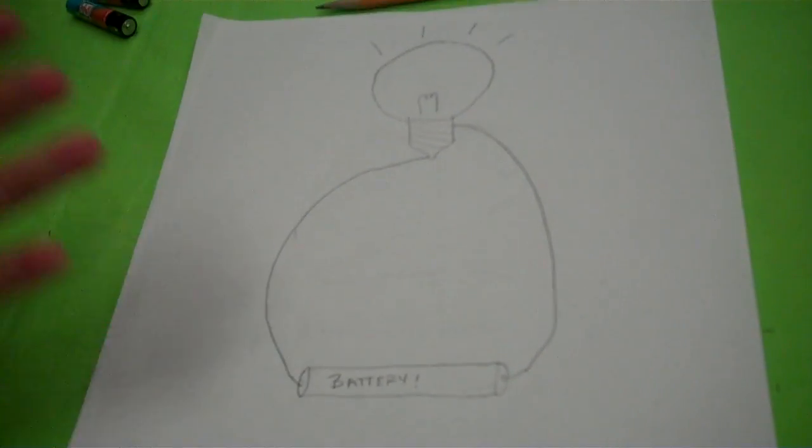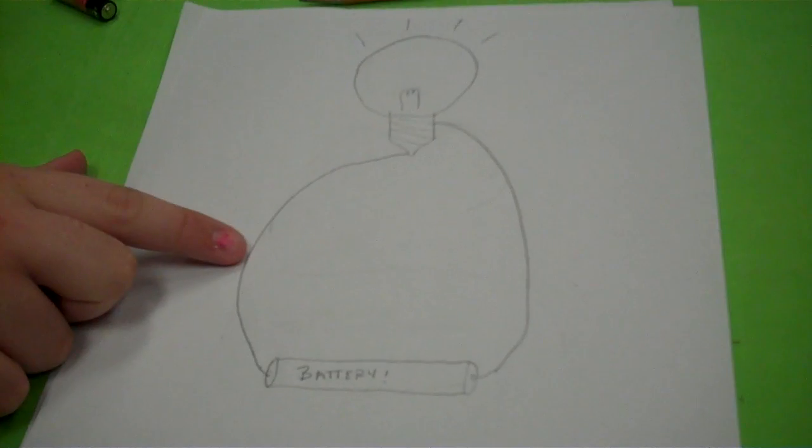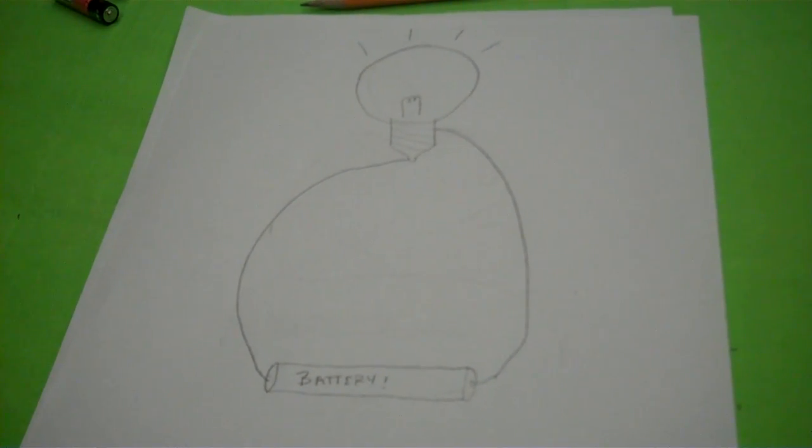So what you want to do first is provide some paper and a pencil so your kid can draw what they think the circuit will look like. Emphasize that the wires should not cross because if the wires cross then the circuit will be interrupted.